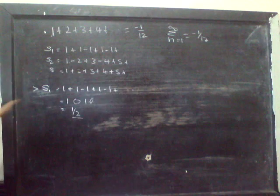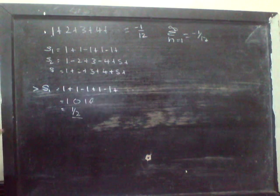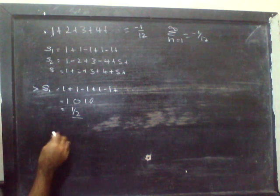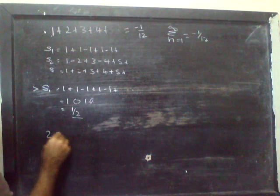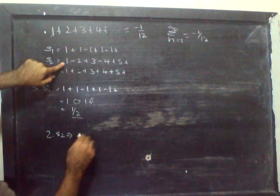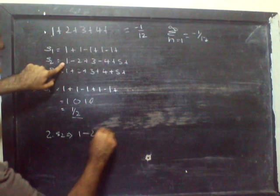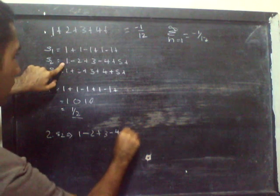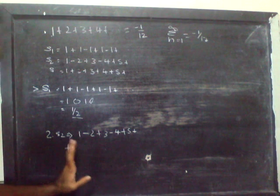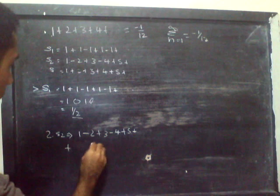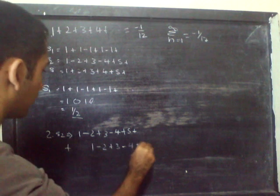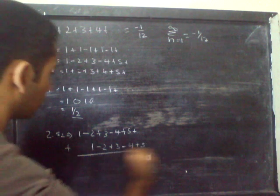S2. What I'm doing with S2 is simply multiply it by 2 and shift one digit to the right. So it's something like this: 2S2 is 1 minus 2 plus 3 minus 4 plus 5 and so on. The other one I've added and shift one digit to the right, so it will be 1 minus 2 plus 3 minus 4 plus 5 and so on.